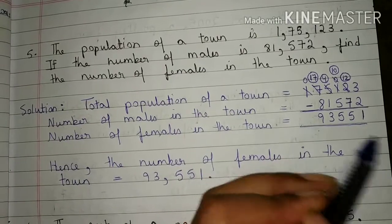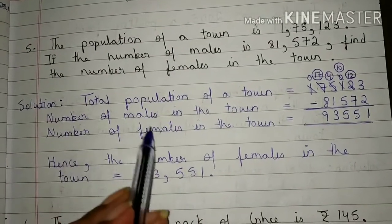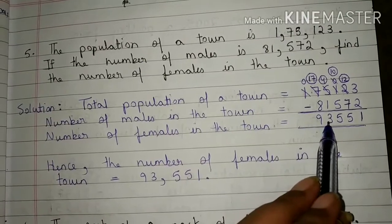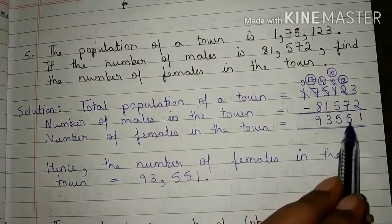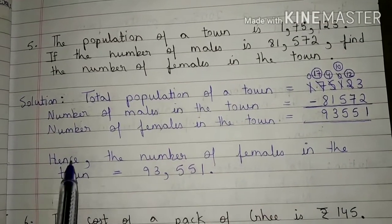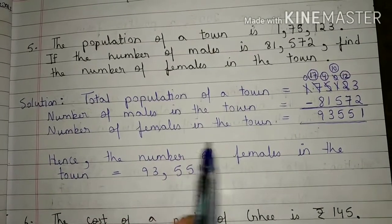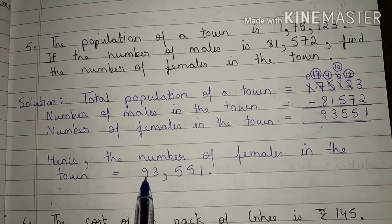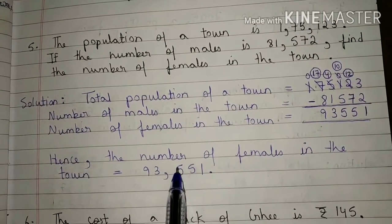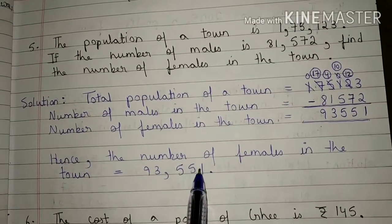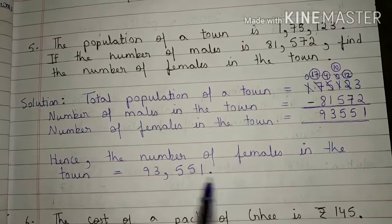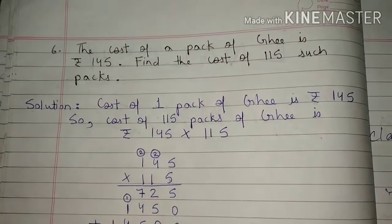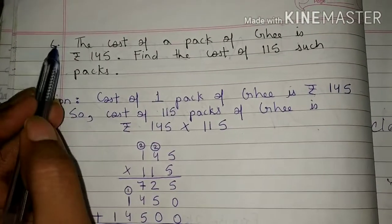So the number of females in the town is 93,551. Hence the number of females in the town is 93,551. Now come to question 6.